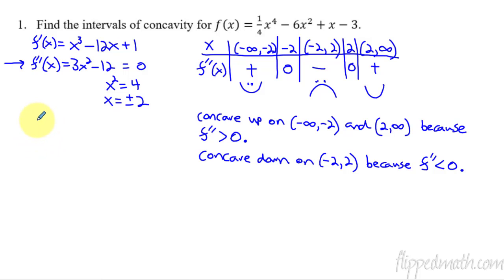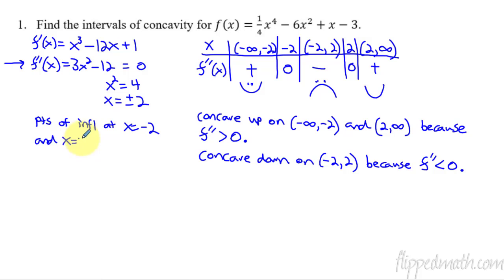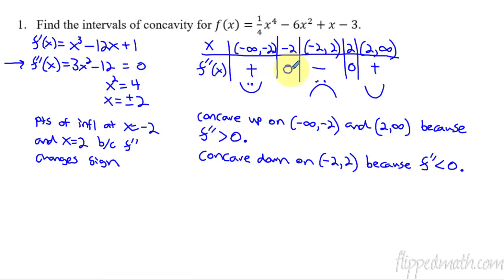So the points of inflection — I'm going to abbreviate — points of inflection at x equals: where does this happen? It happens where the second derivative is changing signs. So here it went from positive to negative, and then from negative to positive. So it's happening at x equals negative 2, and x equals 2. And now we say the reason why: because f double prime changes sign. So when f double prime changes sign, that's how we know we have a point of inflection. It's not because the second derivative was zero — the second derivative actually might not exist, and it could still be a point of inflection.